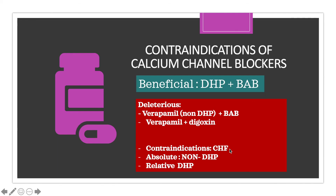Regarding contraindications: DHPs and beta blockers are beneficial together because beta blockers work on cardiac muscle while DHPs work on vasculature — they decrease blood pressure and angina through different mechanisms. However, it is deleterious to give verapamil, a non-DHP, with a beta blocker, because both work on cardiac muscle and will cause severe hypotension and bradycardia. Verapamil and digoxin are also contraindicated together. In congestive heart failure, non-DHPs absolutely should not be given, and DHPs should be given only with caution.